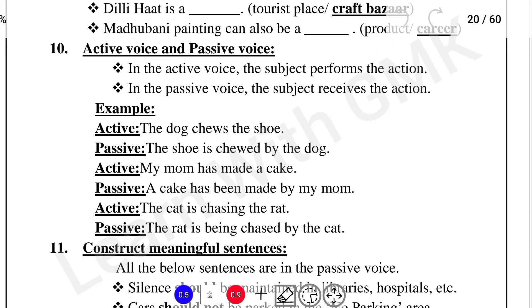Active voice, passive voice. Active voice is when the subject performs an action — that is active voice. Passive voice is when the subject receives an action — that is passive voice. Perform: active voice. Receive: passive voice.